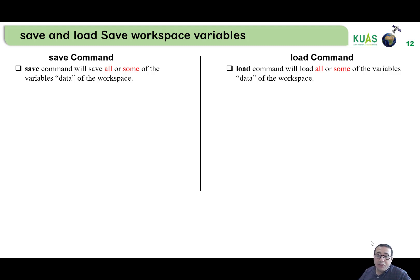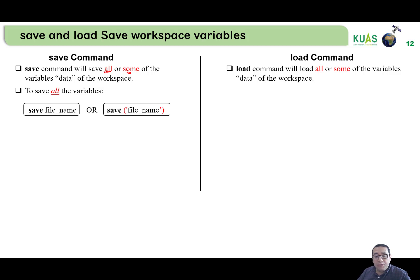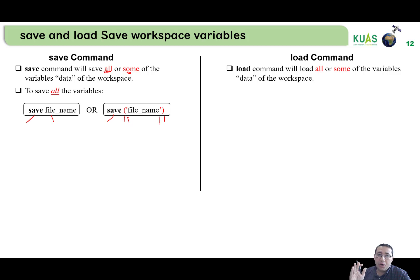The save command will save all or some of the variables of the workspace. To save all the variables, just use save, then a space, and then the file name — any file name. Alternatively, we can use save with open parentheses and then the file name inside single or double quotation marks.